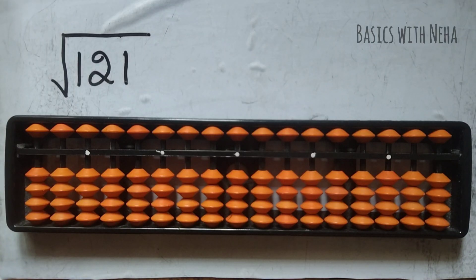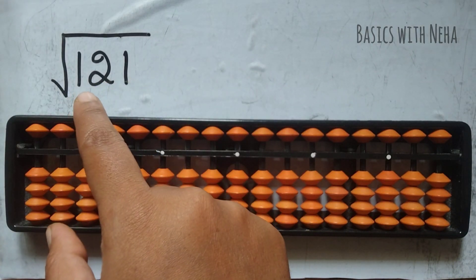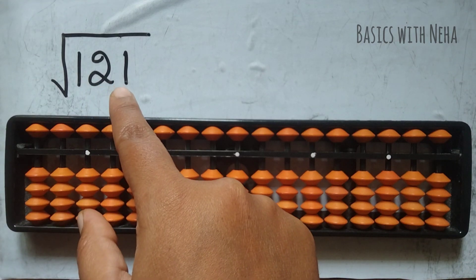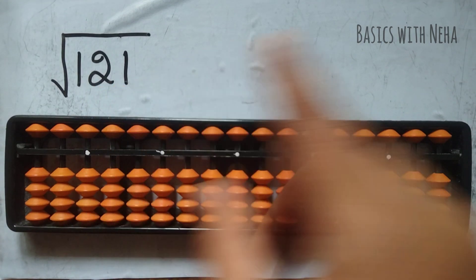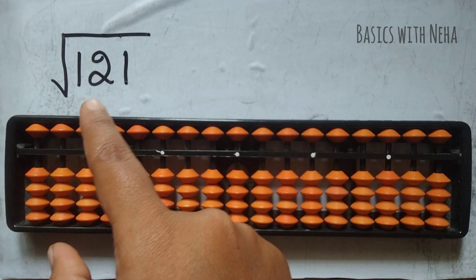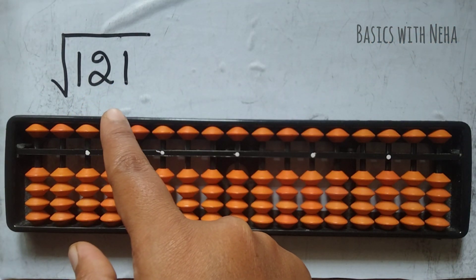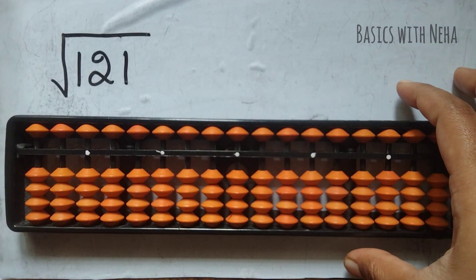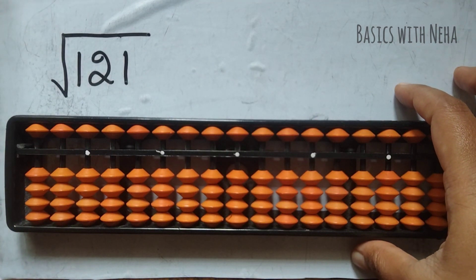Hello, welcome back to my YouTube channel. In today's video, let's do the square root of 121 using the abacus tool. We also know that 121 is a perfect square number, so just follow this video completely to understand square roots using the abacus tool.